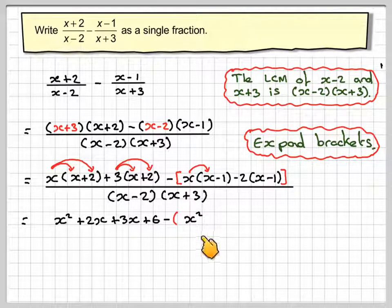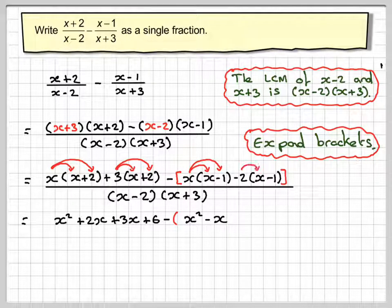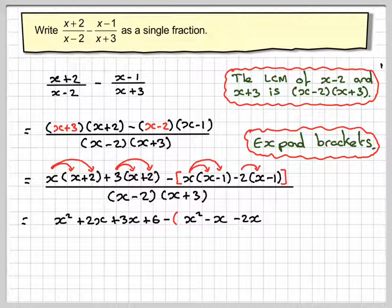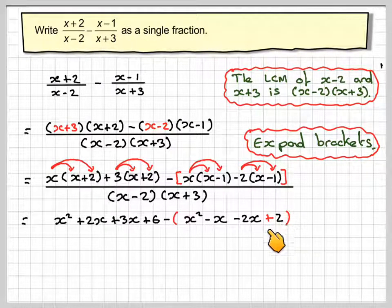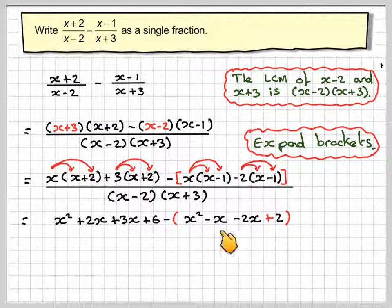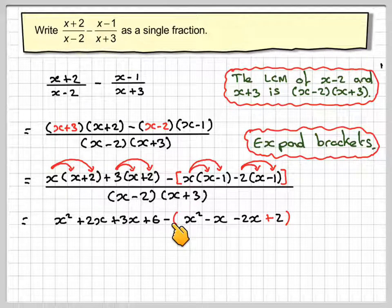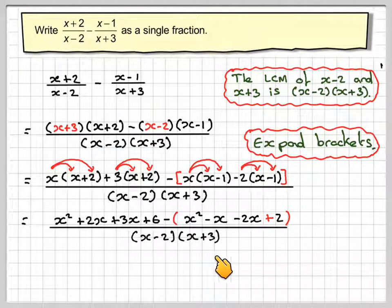Then we're going to do x times x, which is x squared. x times minus 1, which is x minus 2 times x, which is minus 2x. And now here we have to be careful. Minus 2 times minus 1 gives a plus 2. This is a very common mistake to not get the sign right here. Still got the brackets in because we've got a minus sign in front. Still all over x minus 2x plus 3.